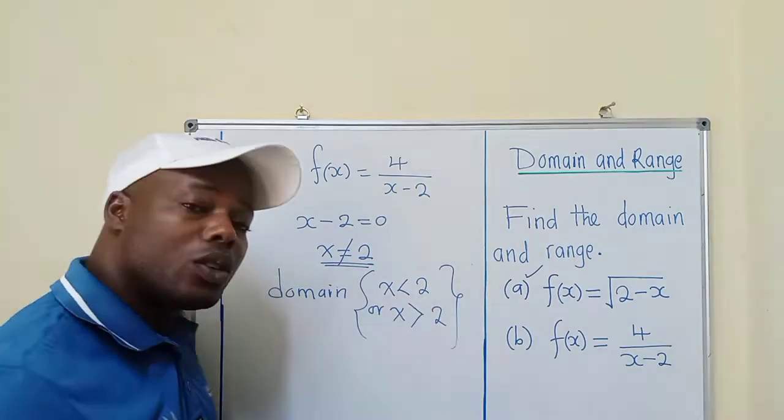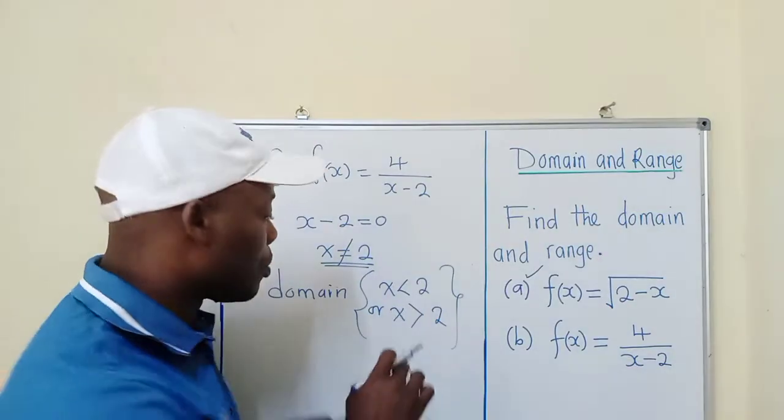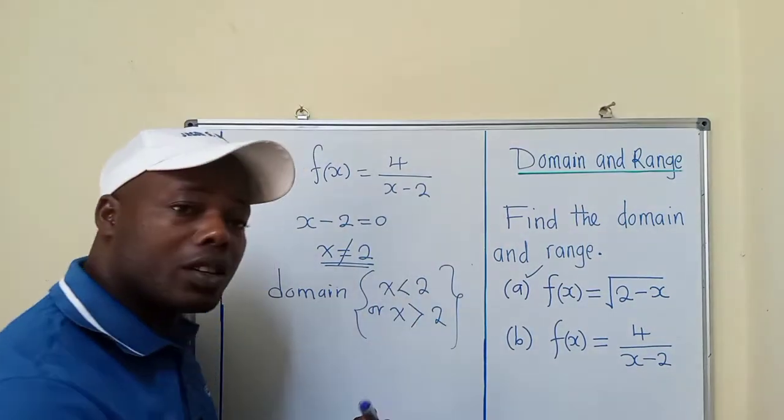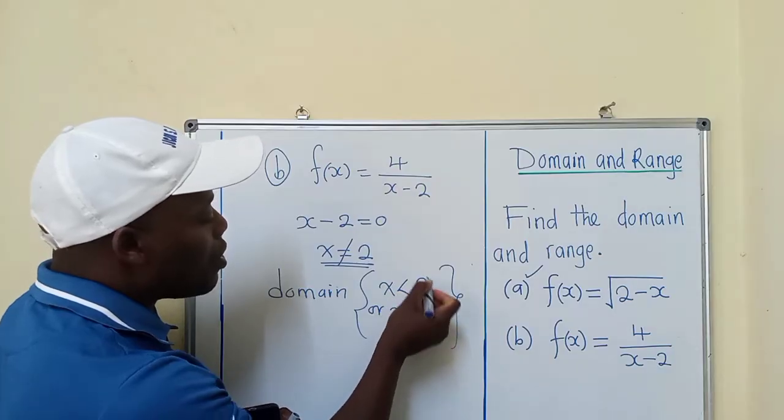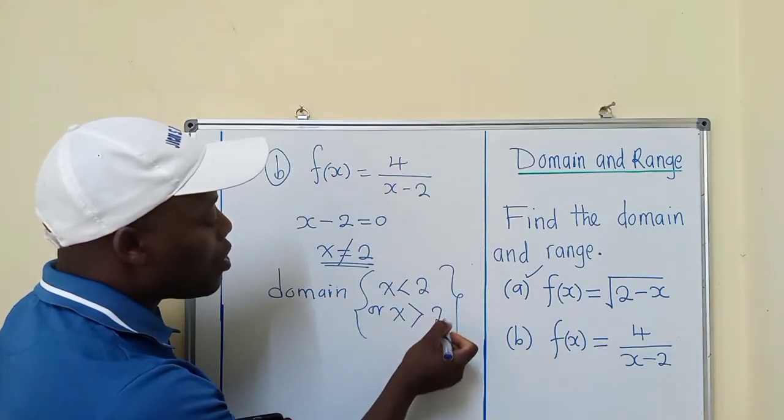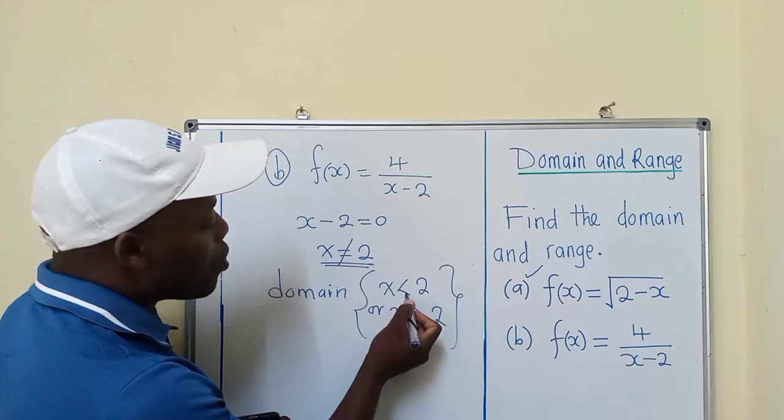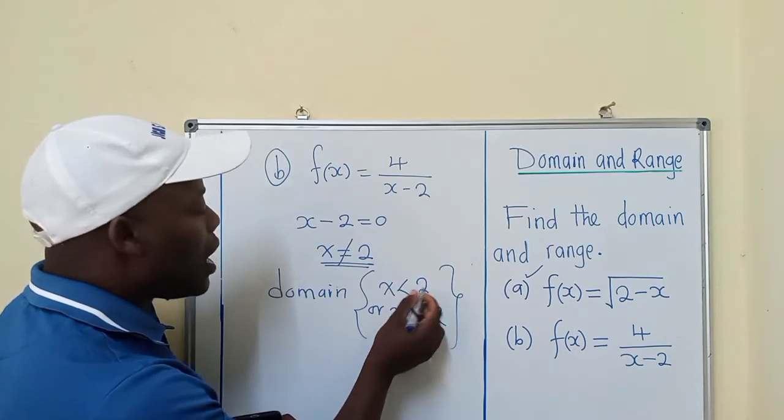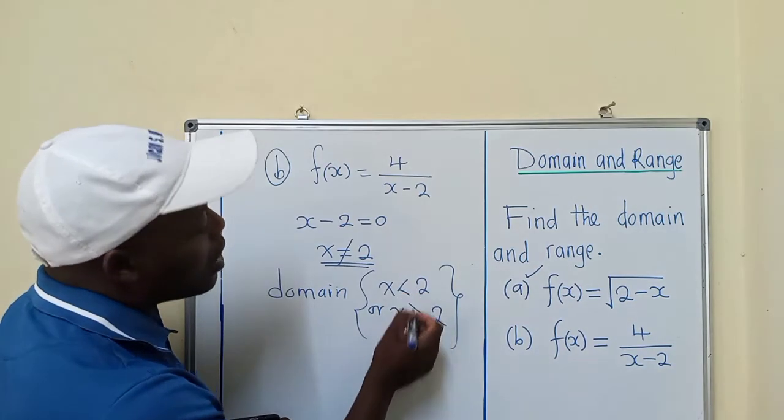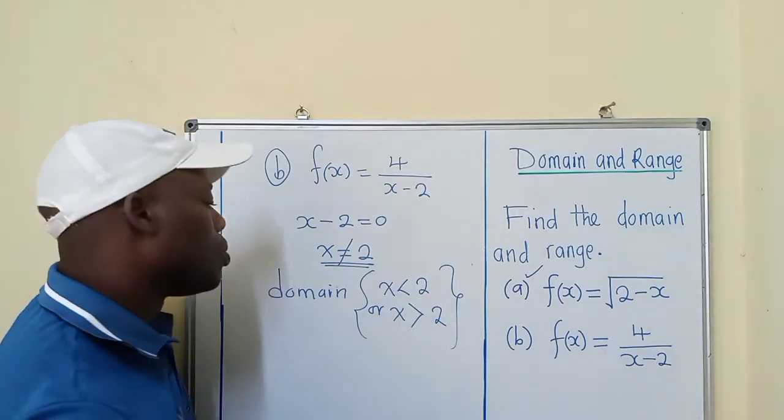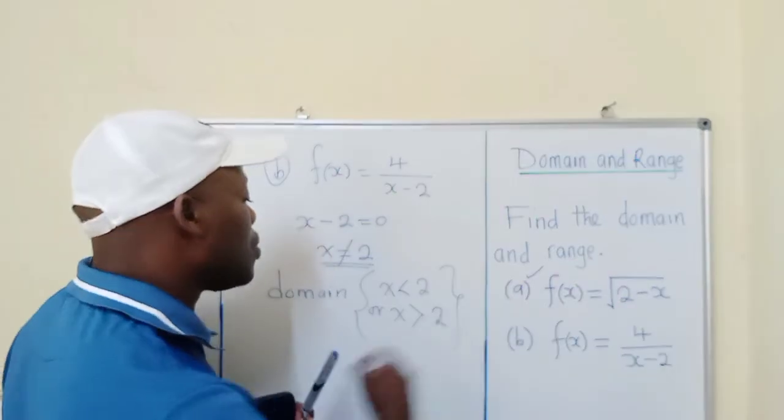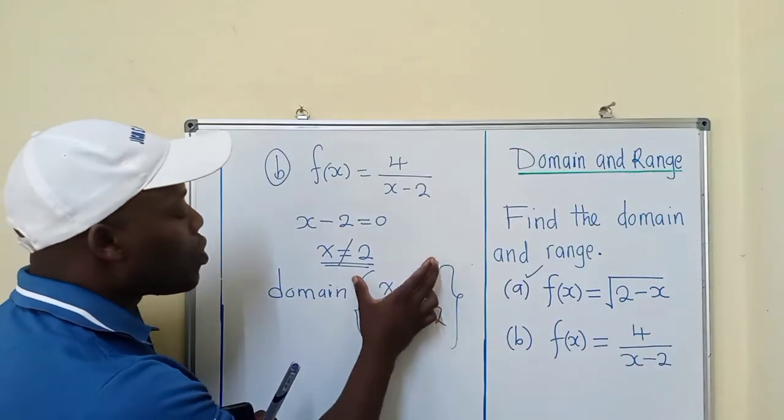If you know how to work with these inequalities, you'll find that when we say 'less than,' it means 2 is not included. Similarly here, 2 is not included. So x may be any number less than 2, or any number greater than 2. These are the two solutions.